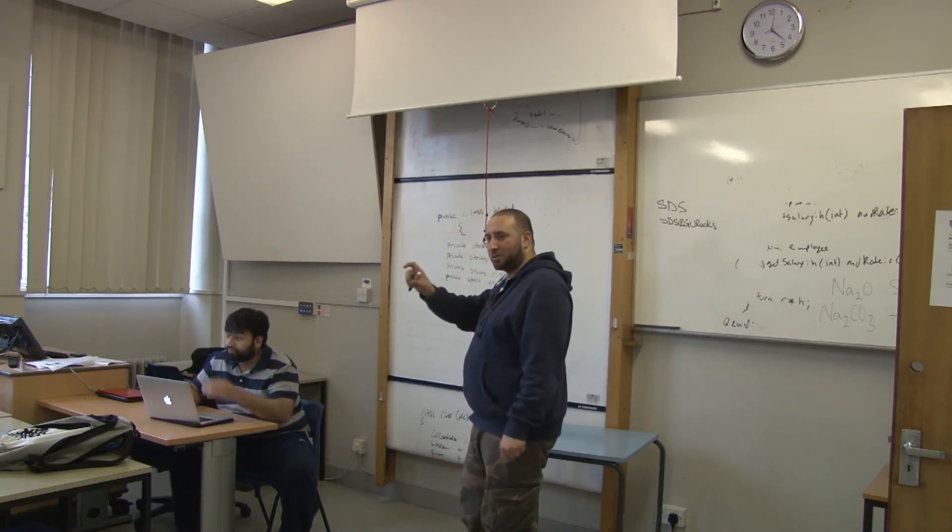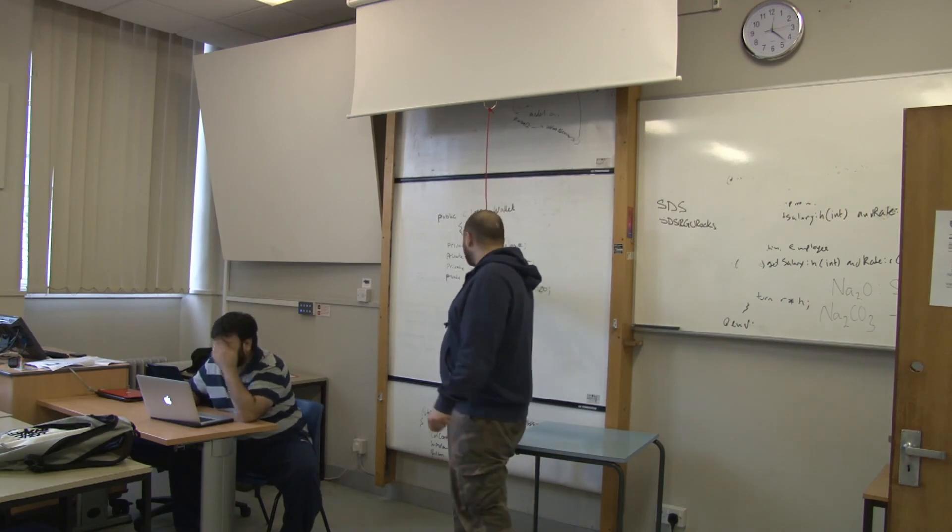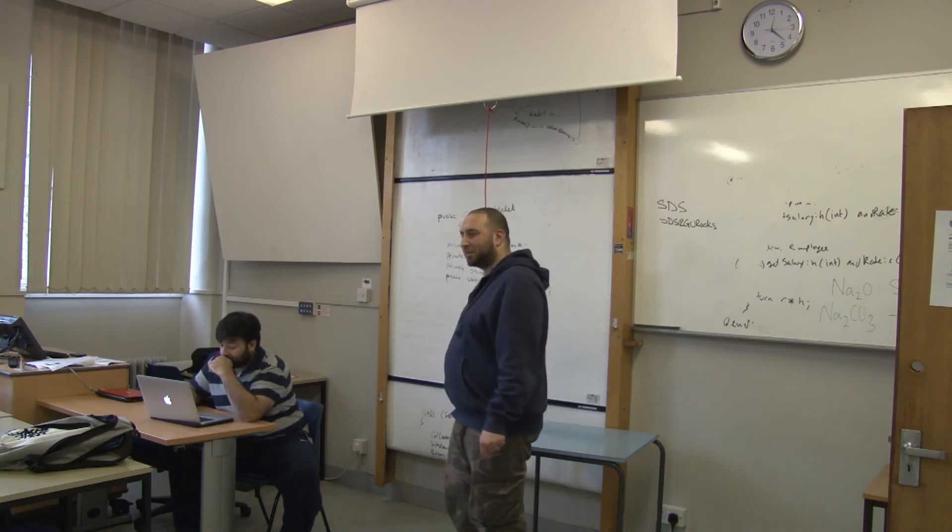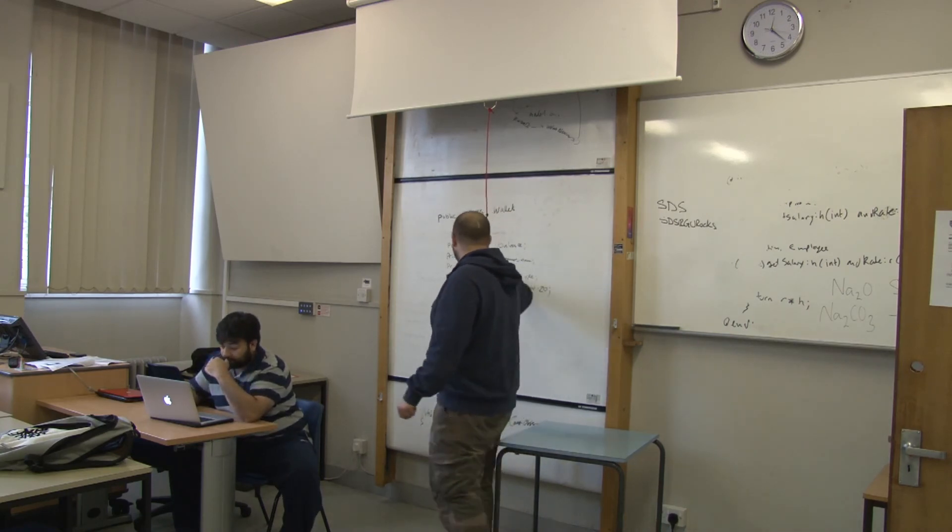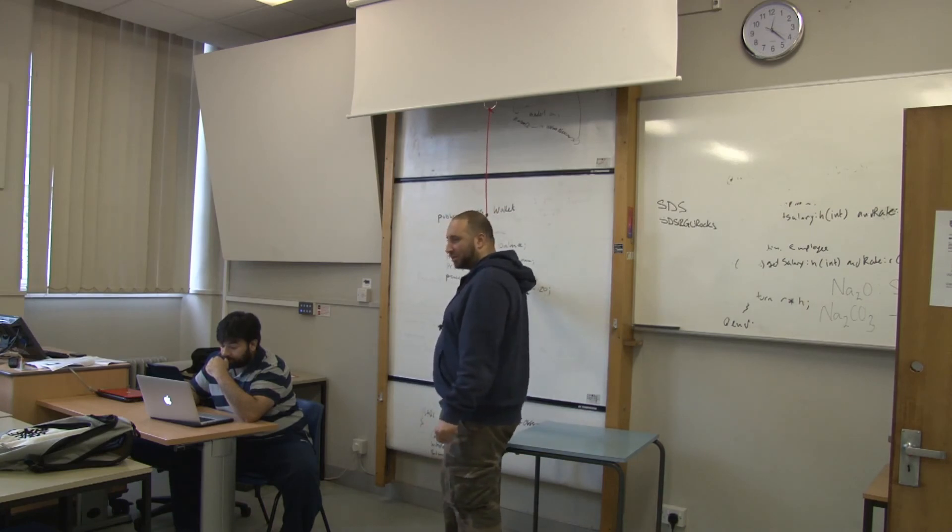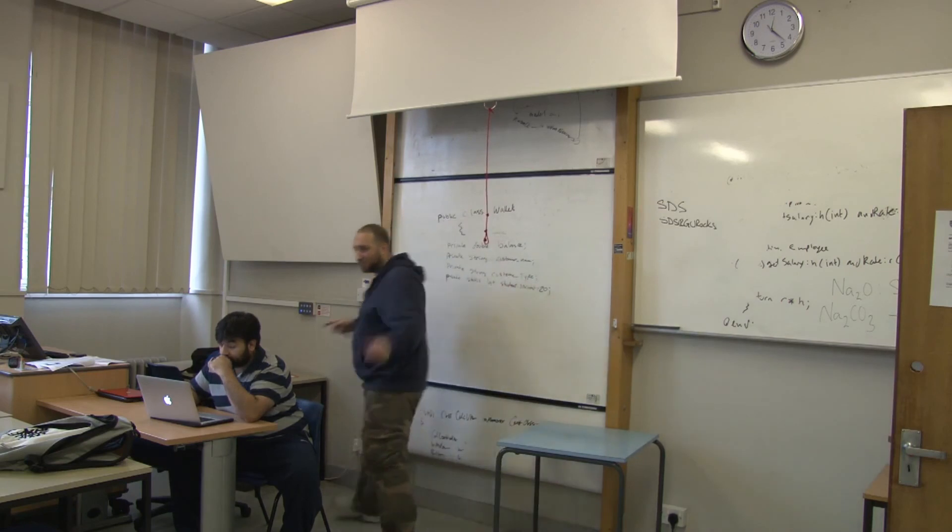You can say customer type or student, is student, equals false, and then you need to pass true value to make it true. But this one is simple. Let's make it string, yeah? So you don't get confused. So this could be a customer as a student or non-student, as a string.